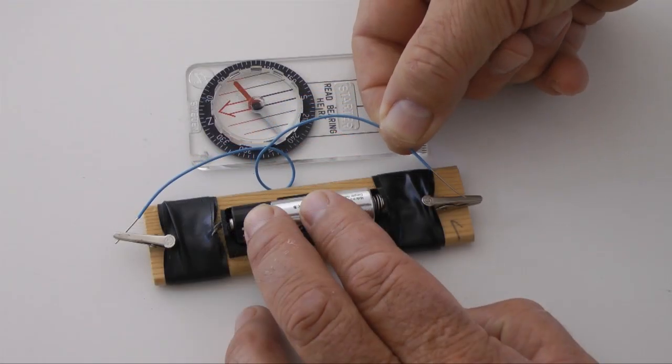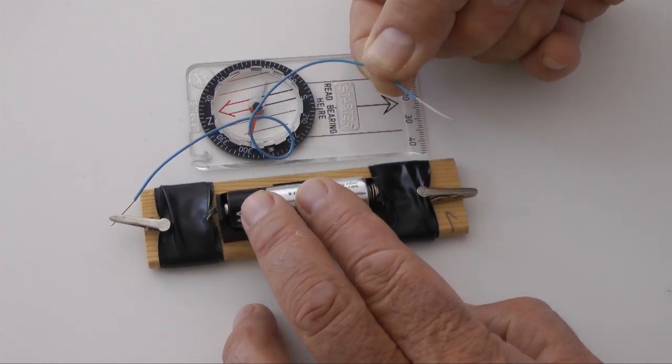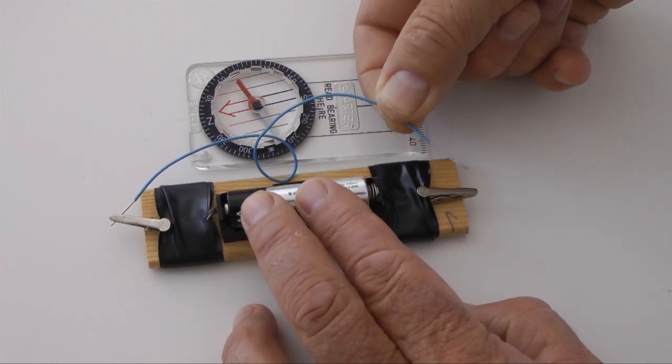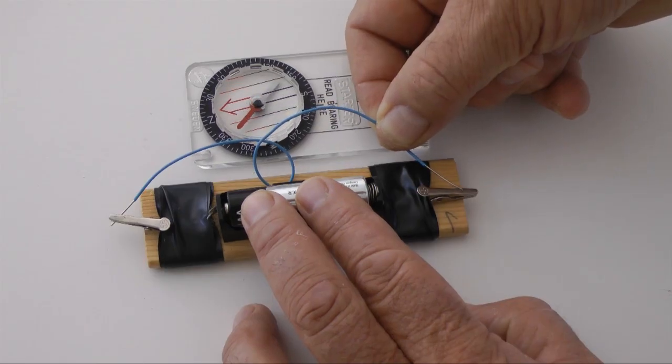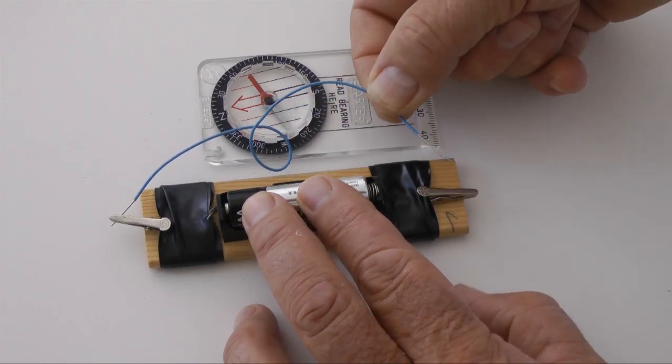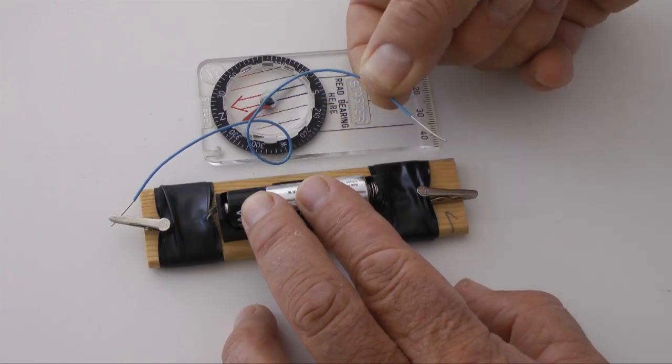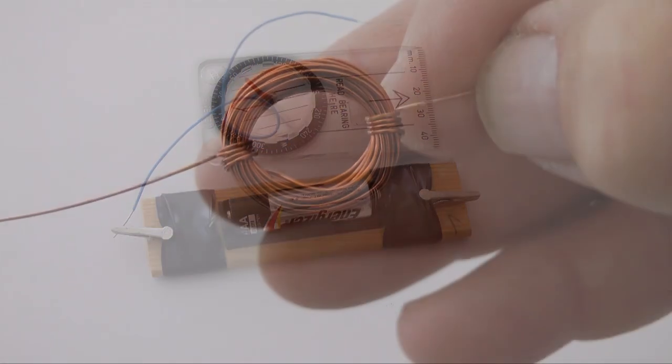You may also know that a magnetic field appears when current flows in a conductor. Briefly connecting this wire to a battery deflects the compass's needle. Electricity creates a magnetic field. This effect can be used to create an electromagnet.